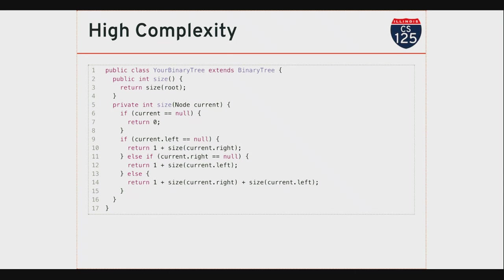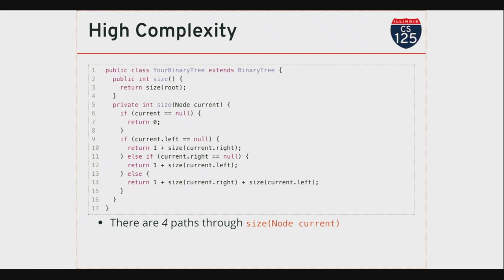What's wrong with this size implementation? In the overly complex version, I'm already checking for null in the base case—so I'm allowed to call size on null; the size of an empty tree is zero. So all of those lines—line 10, line 12, line 14—can all be replaced with just one recursive call. I don't need to do all this checking of my right and left subtree. This is what we call overly complicated code—there are four paths through this code: I can return here, here, here, or here.